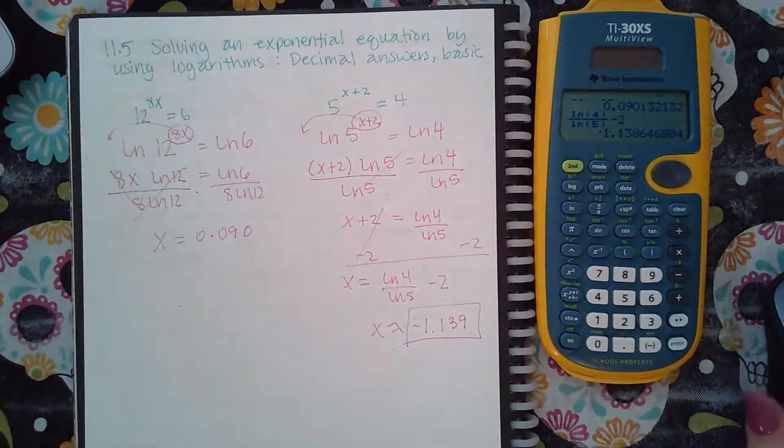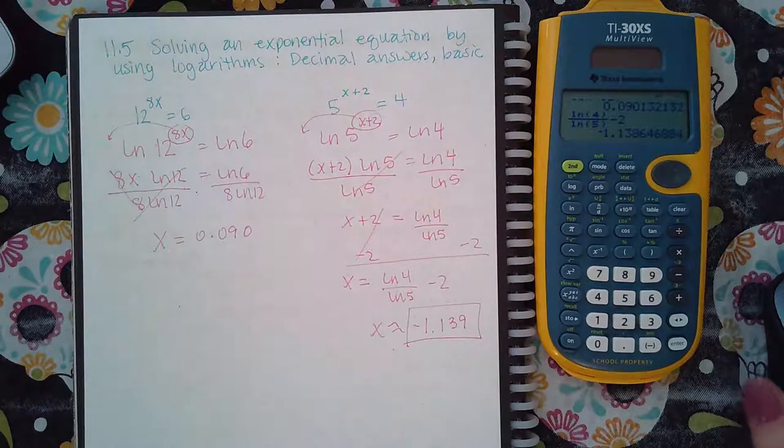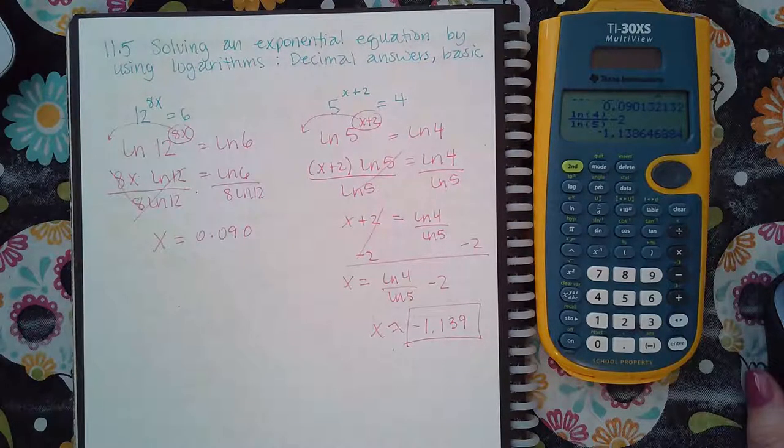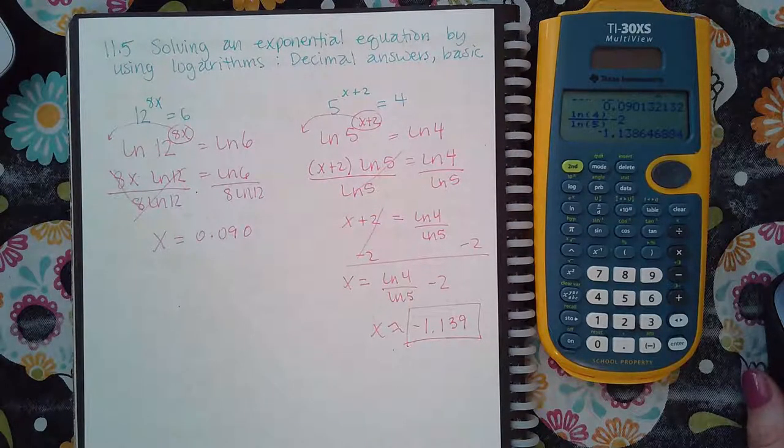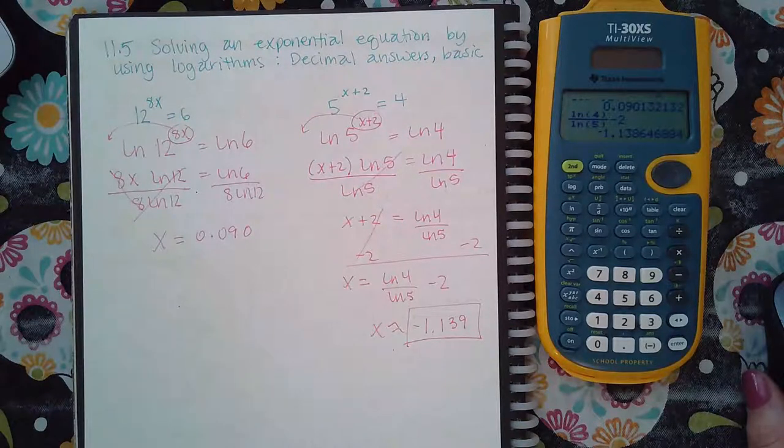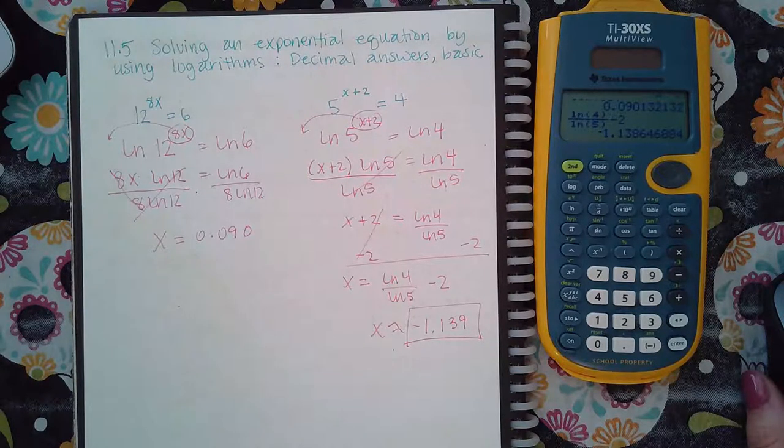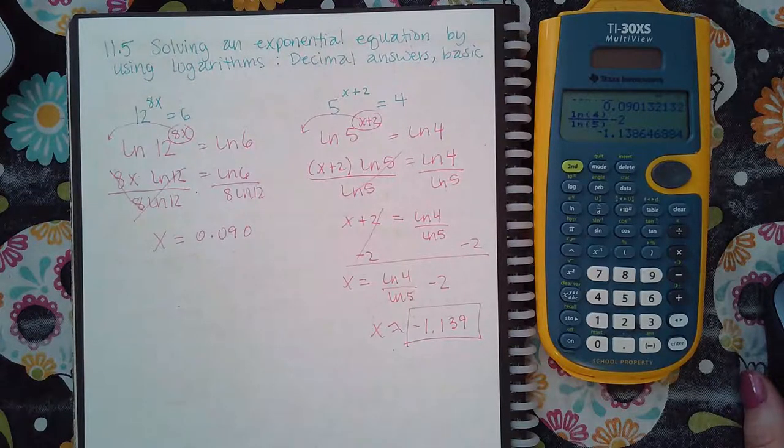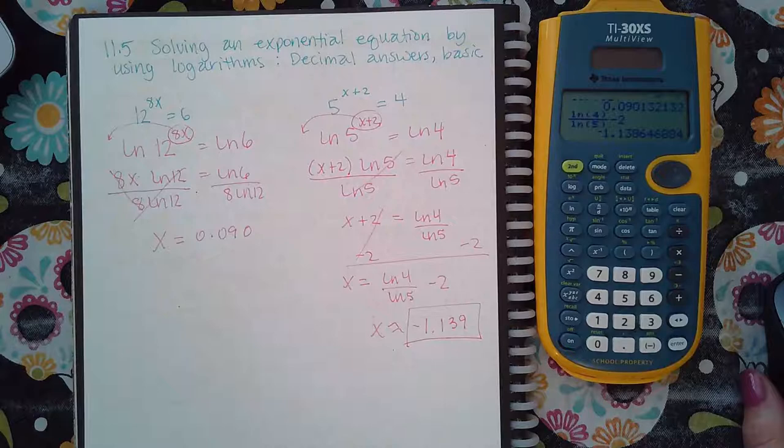So just take the ln on both sides so that you can use that property that allows you to bring the exponent to the front. And then just start doing your work. Remember that ln of 5, ln of 12, ln of anything is just a number. So you're going to add, subtract, multiply, divide by it just like you would any other regular number. It just looks funny. That's all. But it is a number.